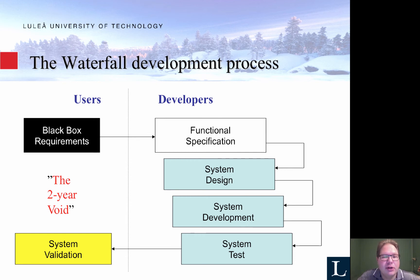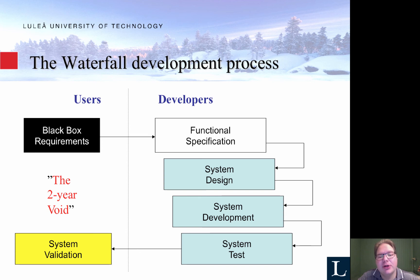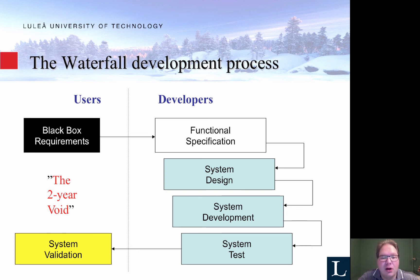To go through a few of the development processes that are quite common: the waterfall development process is quite an old development process that was used a few years ago. Basically, it says you have some requirements that users have and they try to express these to developers. The developers then try to make a functional specification, then a system design where they design classes and class diagrams, then they start developing and testing it. And once they have something that works, they show it to the users. The problem with this is that users are not involved, and if you had a problem with the functional specification, you may have to go back to scratch and start all over — so there's a two-year void, and that's a big problem.